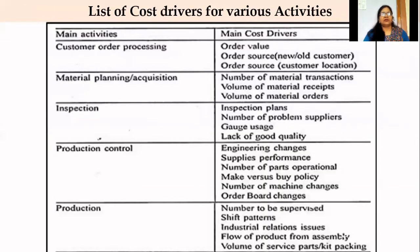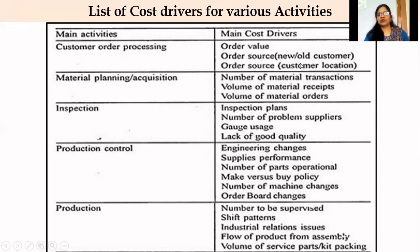Now let's see the list of cost drivers for various activities — these are very important for calculating problems. The first main activity is customer order processing; cost drivers may include order value, order source (new or old customers), and customer location. For material planning and acquisition, cost drivers are number of material requisitions, volume of material receipts, and volume of material orders.